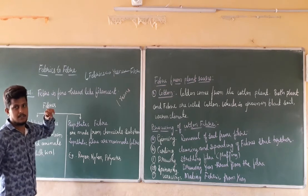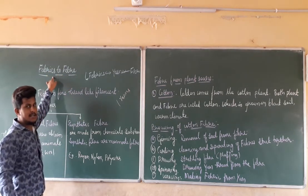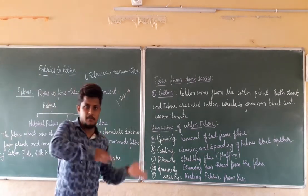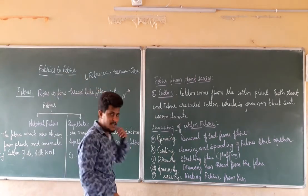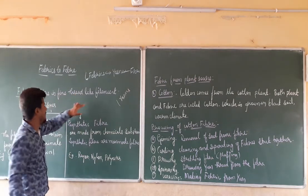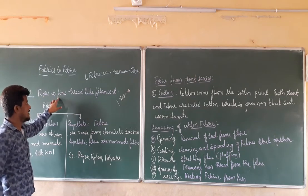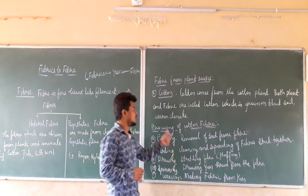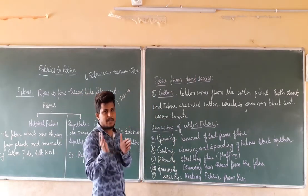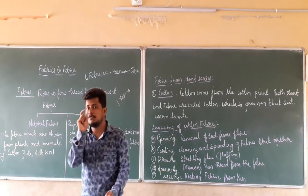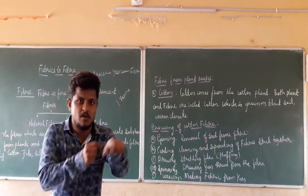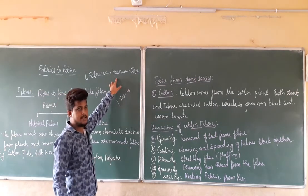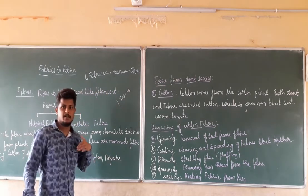The chapter name itself says 'fabrics to fiber' - actually fiber is converted into fabrics. Fabrics are made from yarns, yarns are made from fibers. A fiber is a fine thread-like filament which is present in the threads or yarns. We can say that fiber is the smallest unit present in the fabrics or clothing.